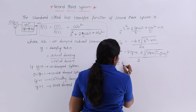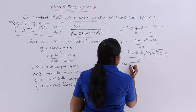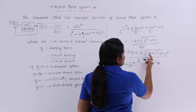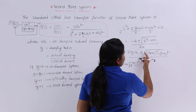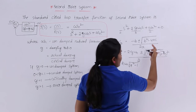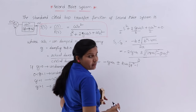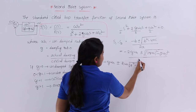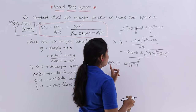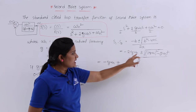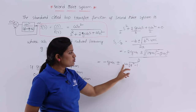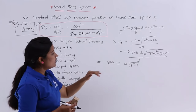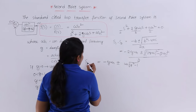After simplification, dividing through by 2A where A equals 1, the 2s cancel and we get: S1, S2 equals minus zeta omega_n plus or minus omega_n root of zeta squared minus 1. This is the resultant equation for the roots S1 and S2 of the second order system characteristic equation.